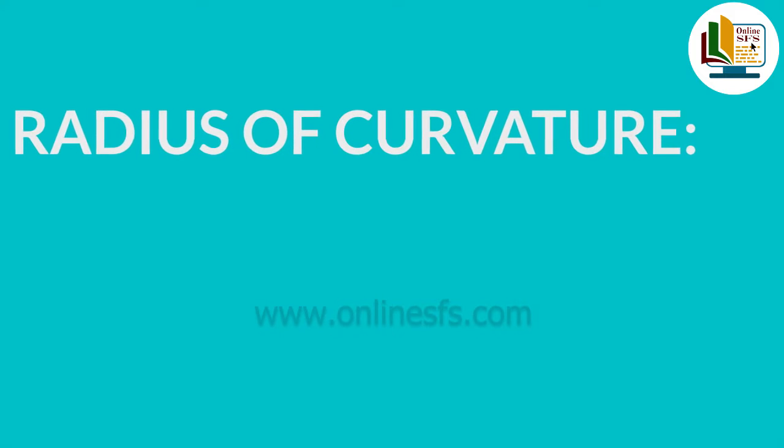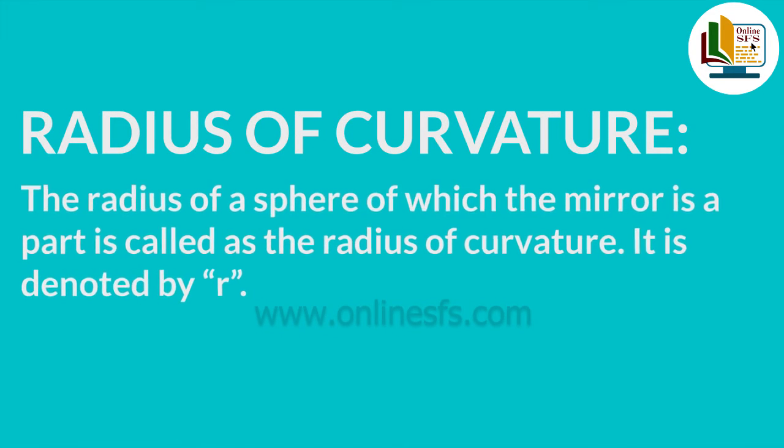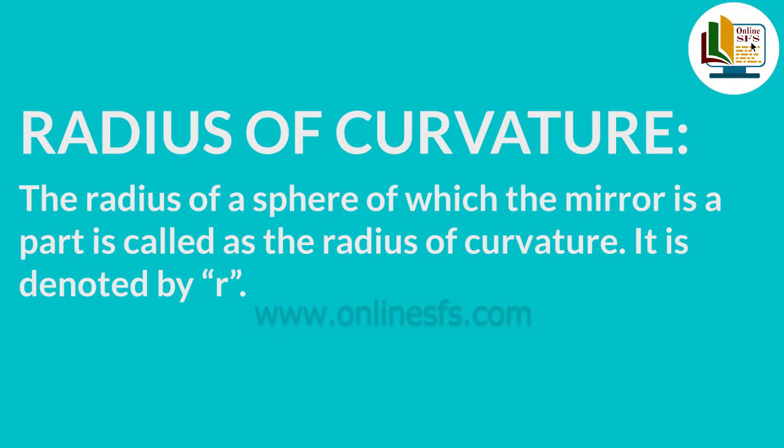Radius of curvature: The radius of a sphere of which the mirror is a part is called radius of curvature. Meaning, kishi polished sphere ke radius jiska ek part as mirror hum use kertae hain, wo radius of curvature kehlata hai. It is denoted by the letter R.